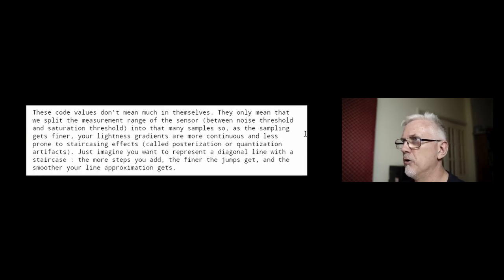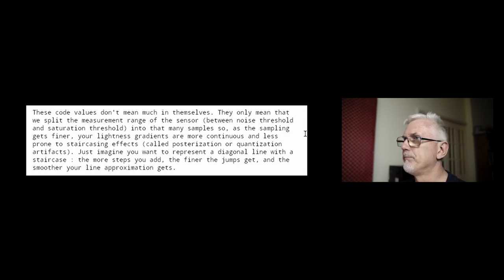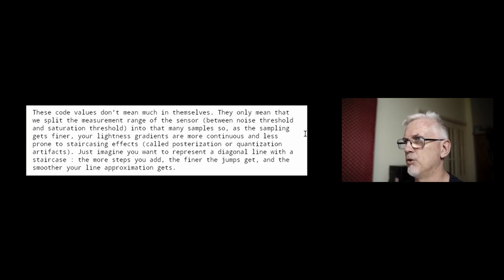These code values only mean that we split the measurement range of the sensor — between the noise threshold and the saturation threshold, in other words pure black and pure white — into that many samples, as defined by the number of bits. As the sampling gets finer, using longer word lengths, your lightness gradients are more continuous and less prone to staircasing effects — what's called posterization or quantization artifacts. Just imagine you want to represent a diagonal line with a staircase: the more steps you add, the finer the jumps get, and the smoother the approximation of your line.